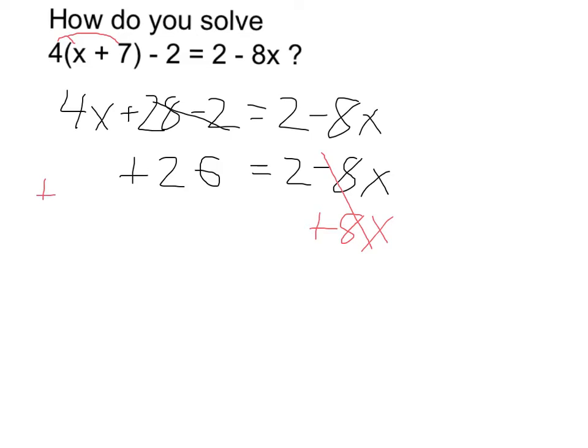Similarly, adding 8x over here to my 4x is going to leave me with 12x. So let's add all this together and clean it up. 4x plus 8x is equal to 12x. So I have 12x plus 26 is equal to 2, because the 8x's cancel over here. Now I have basically a two-step equation.